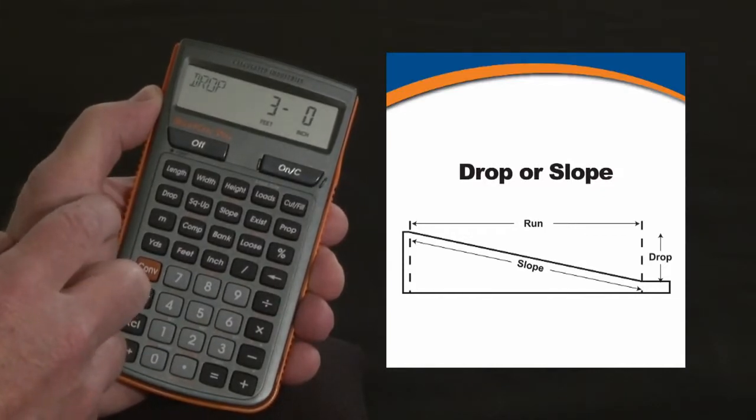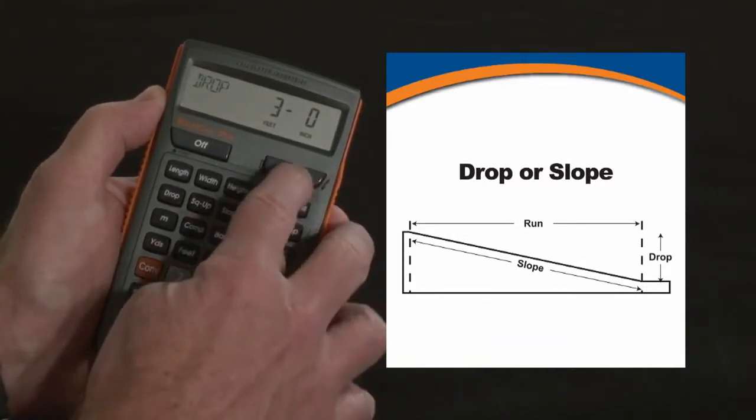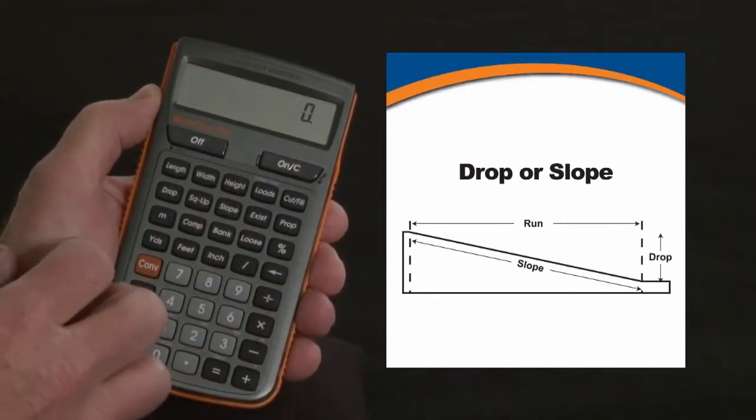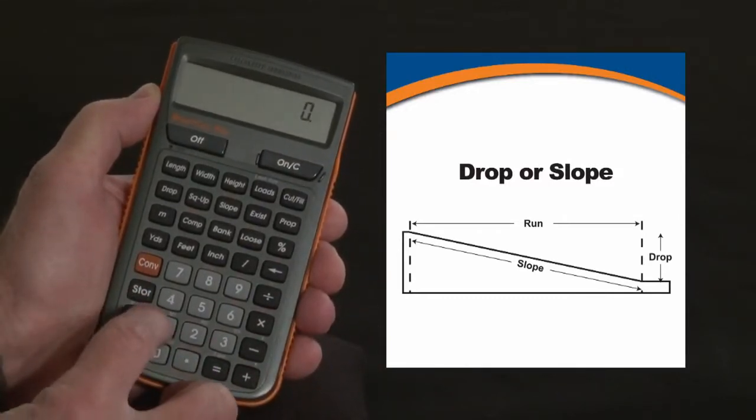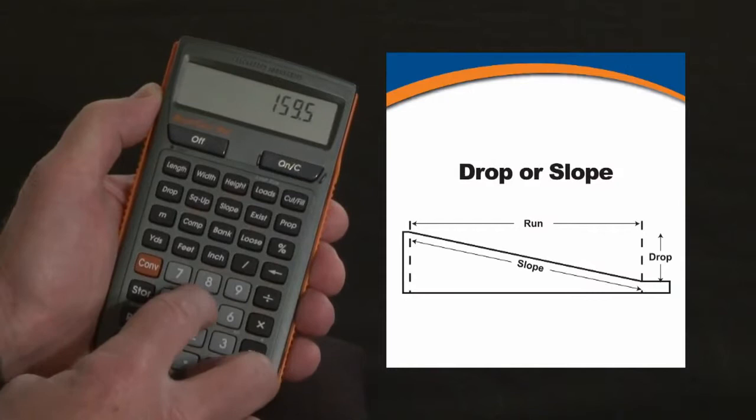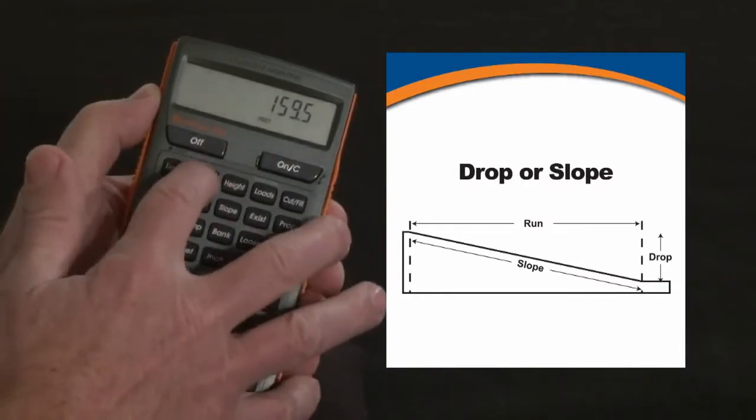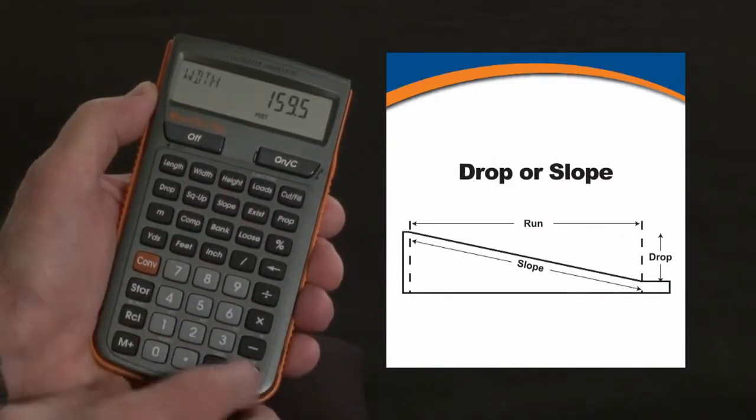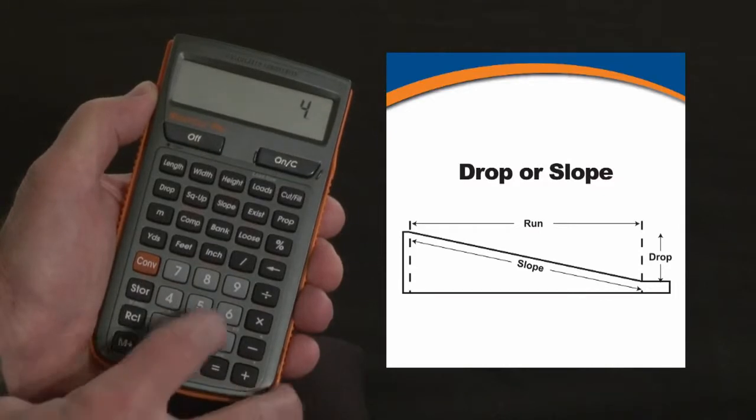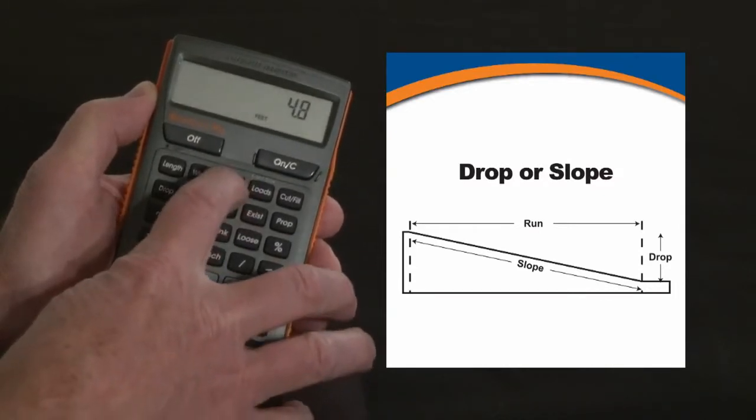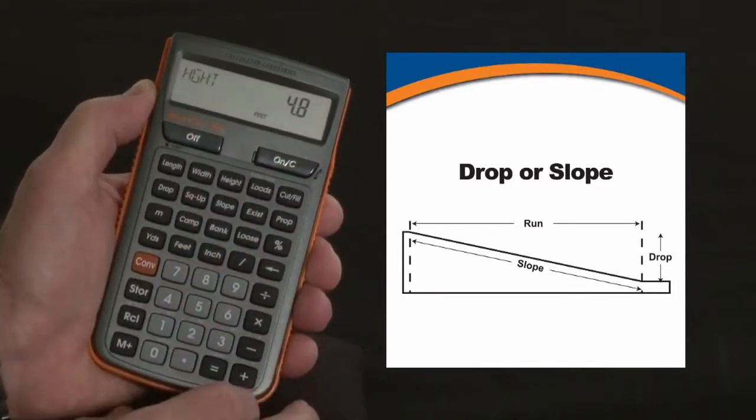There's two ways to calculate drops over a long distance. Another example, say you've got a site that's 159.5 feet across, and at the far end it's 4.8 feet lower than it is at this end. That's your height differential there. What's the slope or percent grade?